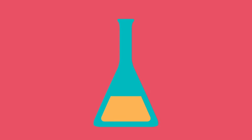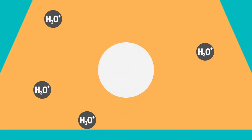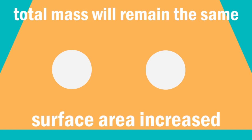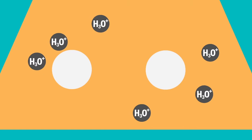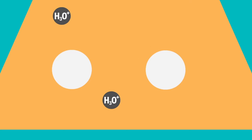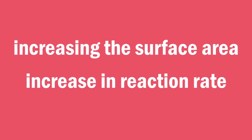Last is surface area. To understand this, consider the reaction between hydrochloric acid and one marble chip. The H3O plus ions from the hydrochloric acid can react with only the surface of the marble chip. If this marble chip is broken down into two, the total mass will remain the same, but the surface area will have increased. The H3O plus ions can now react with more of the marble chip in a given period of time. This means that an increase in surface area results in an increase in reaction rate.